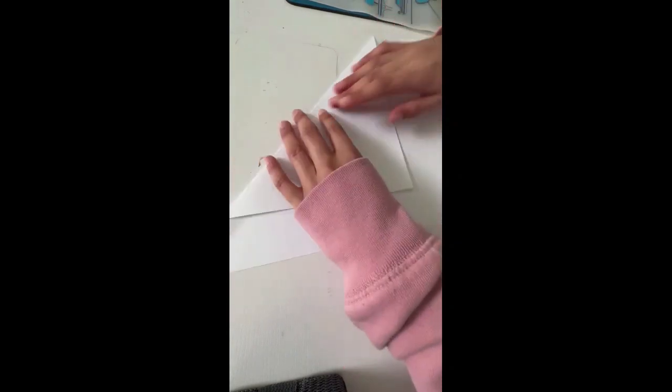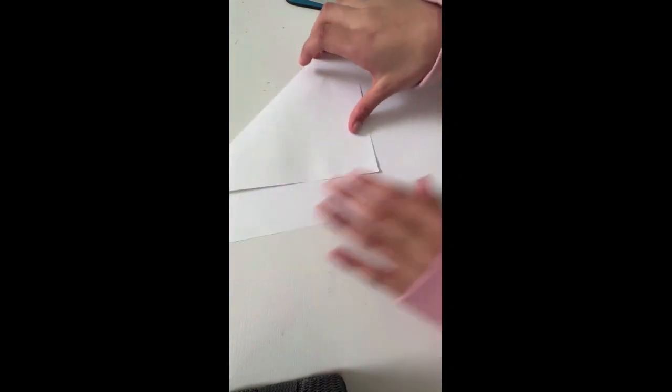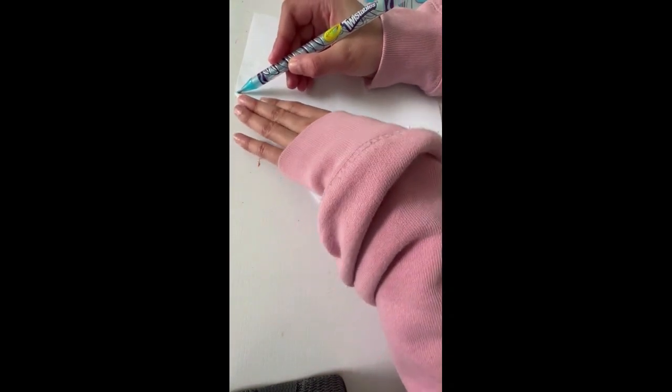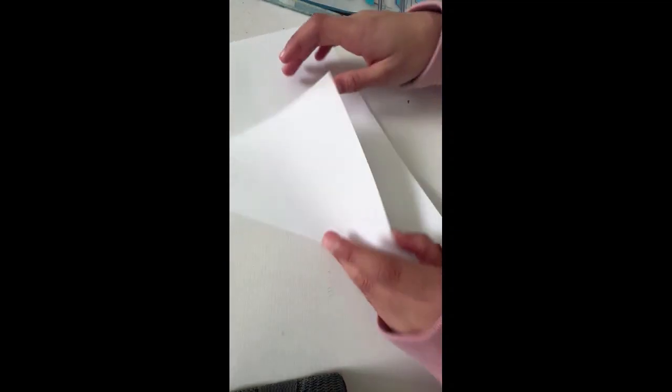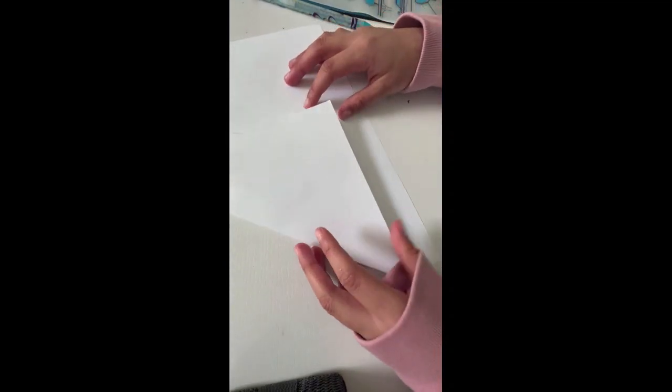And then now what I'm gonna do is I'm gonna trace this outside part. We're going to cut it out, so I'm gonna trace it so it's easier to cut. There we go. Now I can just cut along that line. I'm gonna take my scissors and just cut along that line.